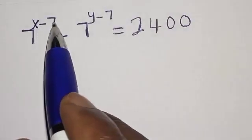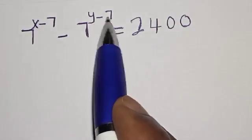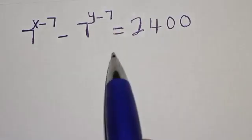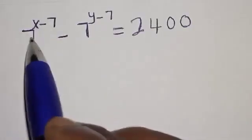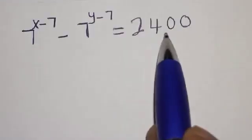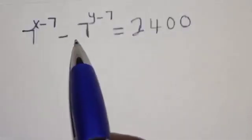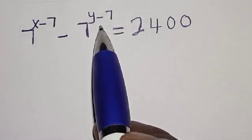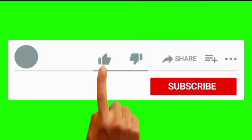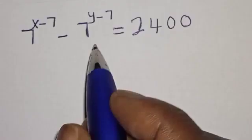Hi everyone, welcome to my class. In this class we want to find the value of x and y from the given equation: 7 raised to power x minus 7, minus 7 raised to power y minus 7, is equal to 2400. Before we proceed, please don't forget to like, share, comment, and subscribe. Thank you. Solution.